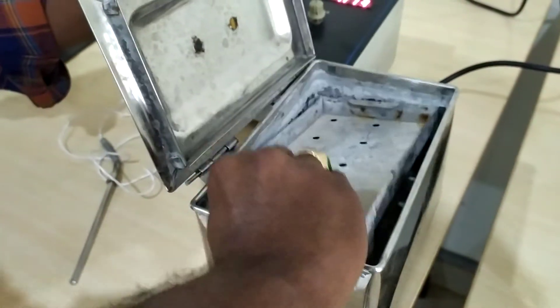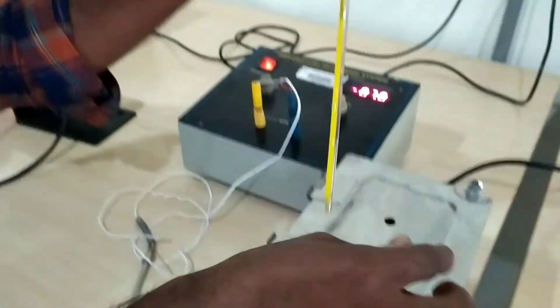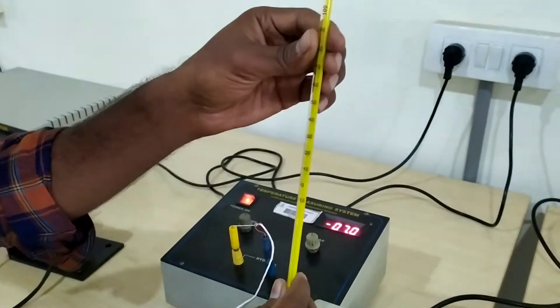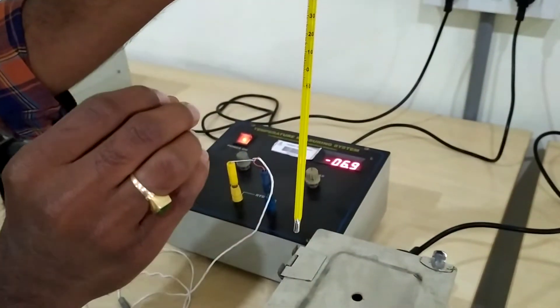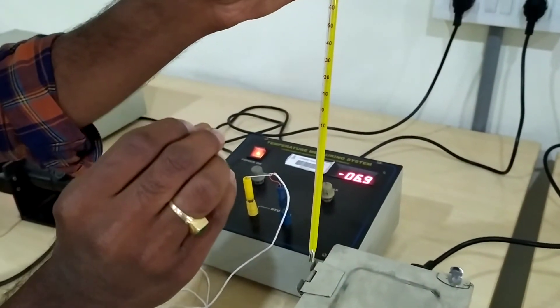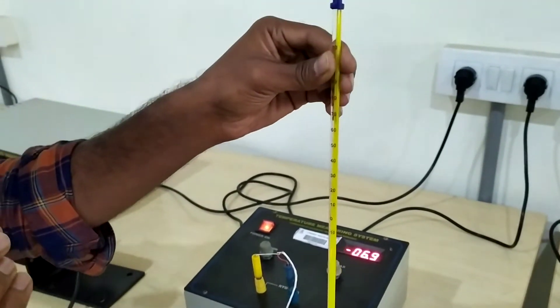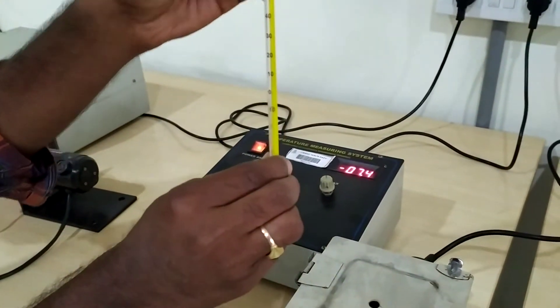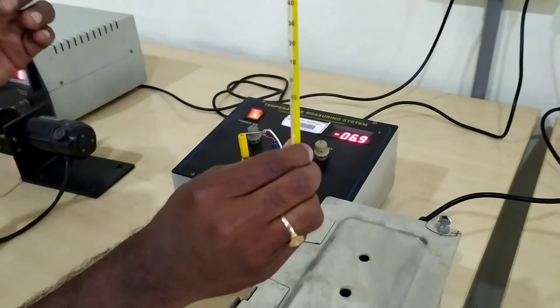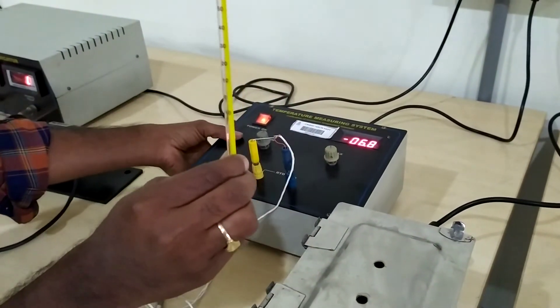That temperature we are going to measure with the help of this thermometer. The temperature reading shown by the thermometer is called the reference temperature. Based upon this reference temperature, we are going to calibrate this RTD device.